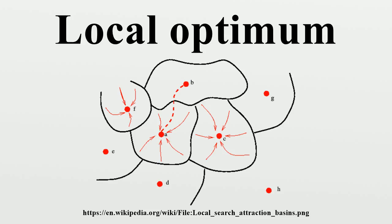Each basin consists of all initial points which have a given local optimum as the final point of the local search trajectory. A local optimum can be isolated or part of a plateau, a locally optimal region with more than one point of equal value.